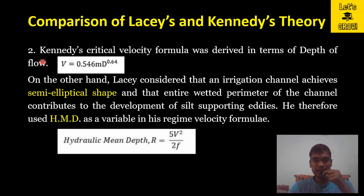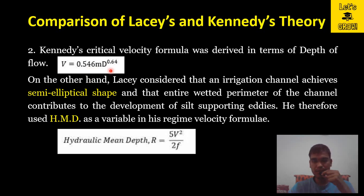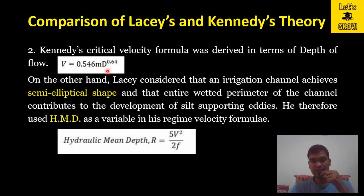Point two: Kennedy's critical velocity formula was derived in terms of depth of flow. The formula is V = 0.546 × m × D^0.64. The critical velocity formula is expressed in terms of depth of flow D only.